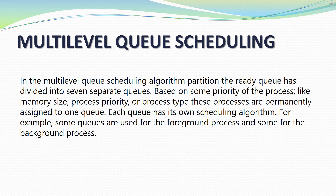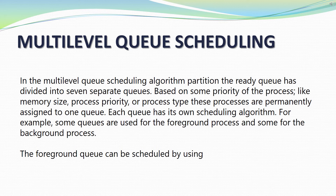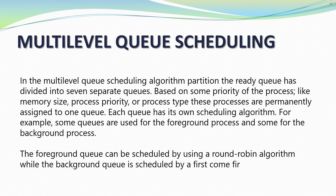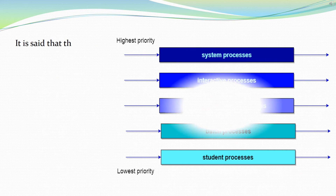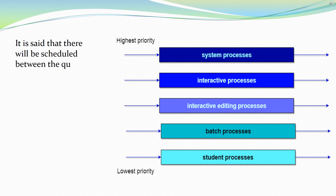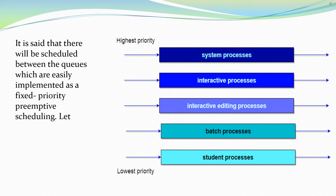For example, some queues are used for the foreground process and some for the background process. The foreground queue can be scheduled by using a round robin algorithm, while the background queue is scheduled by a first come first served, that is FCFS, algorithm. There will be scheduling between the queues, which is easily implemented as a fixed priority pre-emptive scheduling.